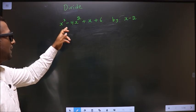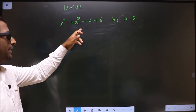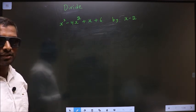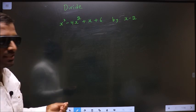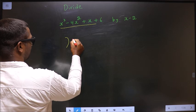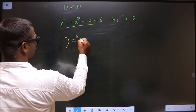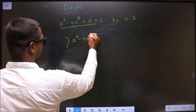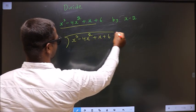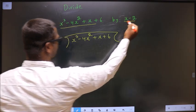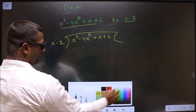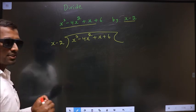Divide x cube minus 4x square plus x plus 6 by x minus 2. To divide polynomials, first we write it in this way. This is the dividend here: x cube minus 4x square plus x plus 6. And this over here is the divisor. This is your step 1.